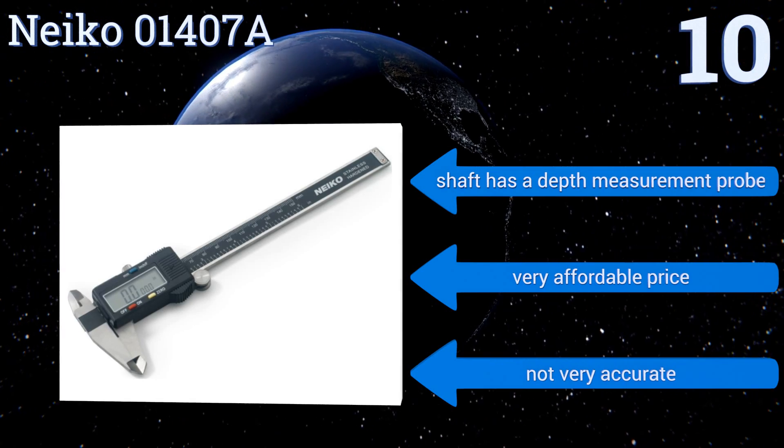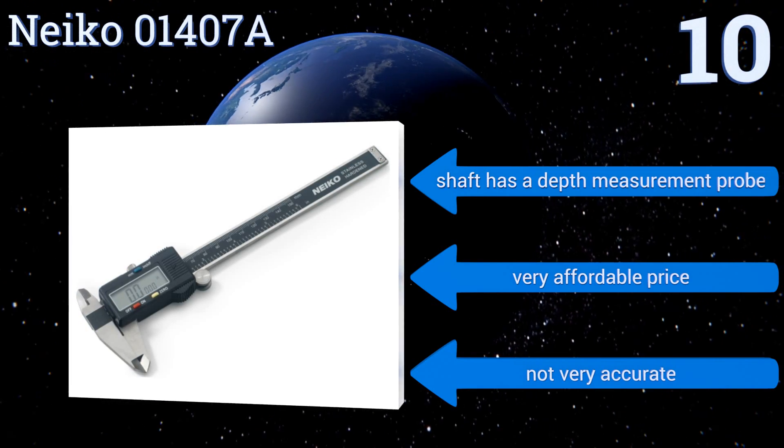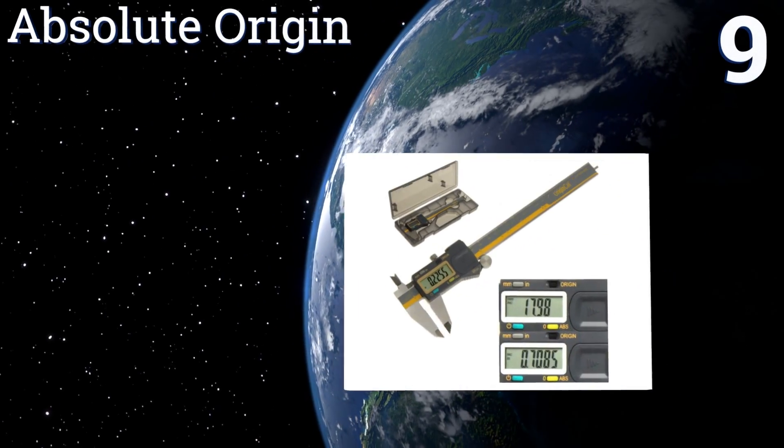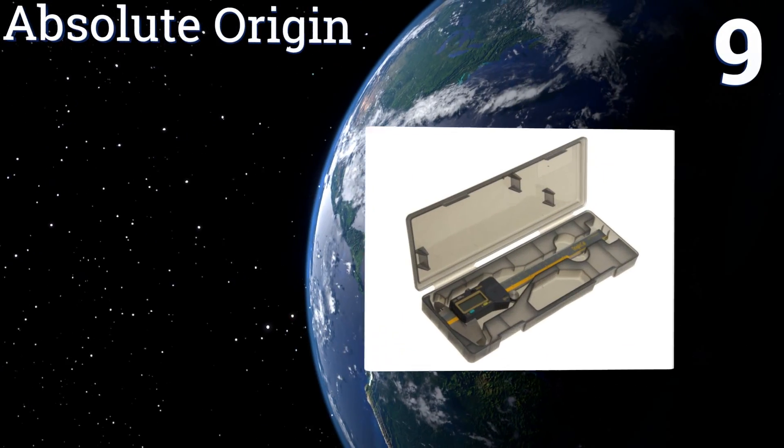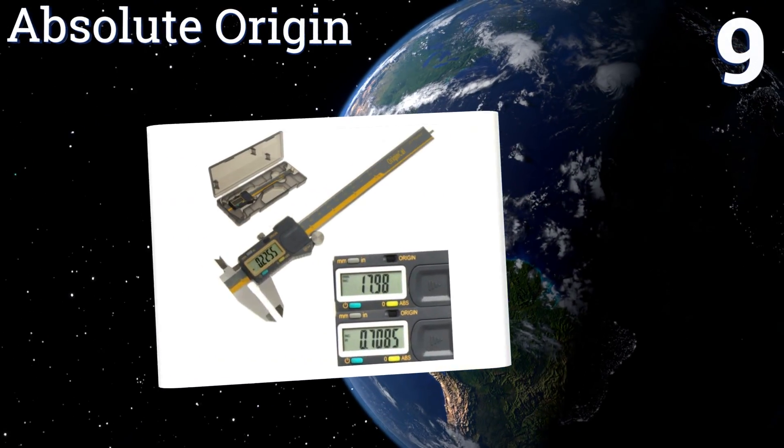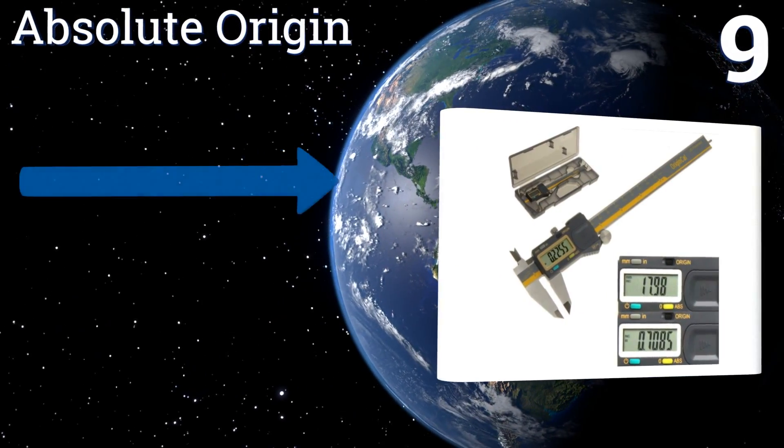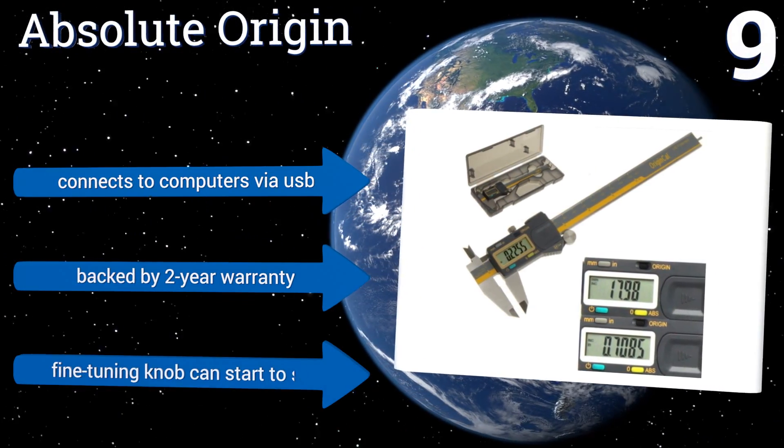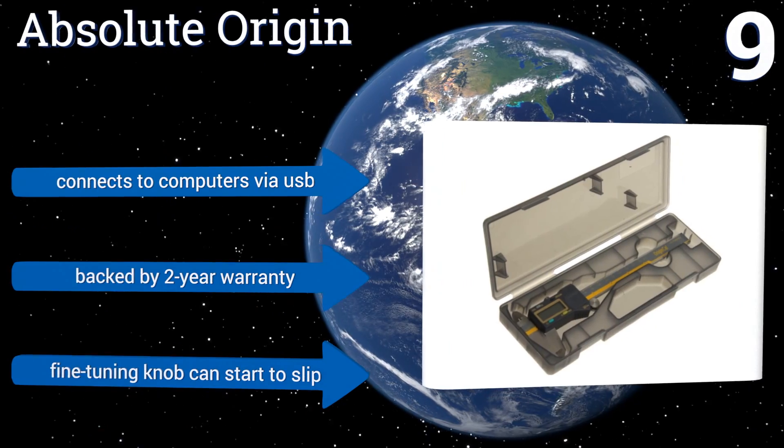At number nine, once set the Absolute Origin uses high accuracy memory technology for keeping track of its original position, which eliminates the need to constantly reset the device to zero. Its battery lasts for two years of light use, it connects to computers via USB and is backed by a two-year warranty, but its fine tuning knob can start to slip.